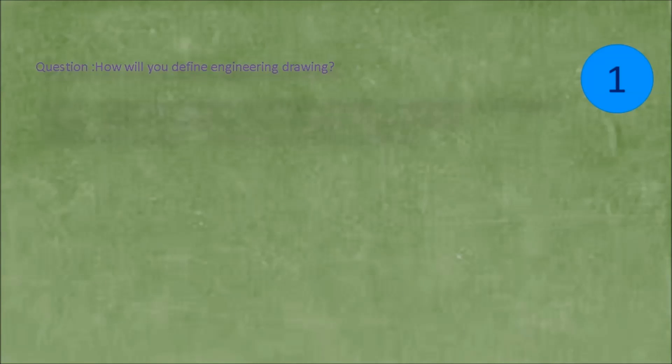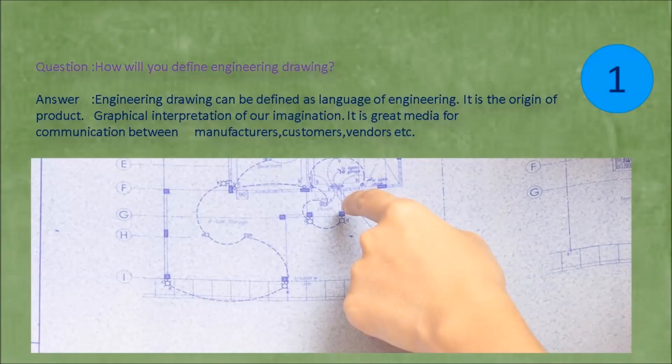Question: How will you define engineering drawing? Answer: Engineering drawing can be defined as language of engineering. It is the origin of product, graphical interpretation of our imagination. It is great media for communication between manufacturers, customers, vendors, etc.